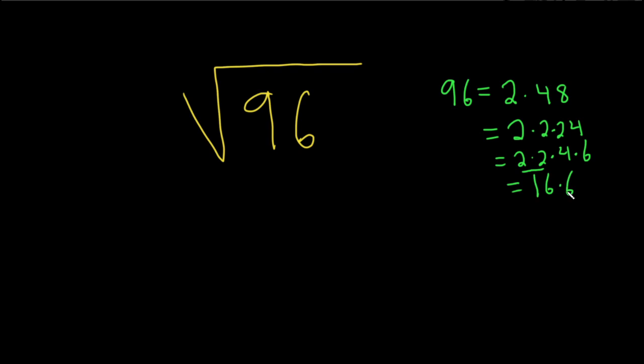That's a perfect square. So we can write 96 as 16 times 6. So through some trial and error and just repeated division by 2, we end up here.